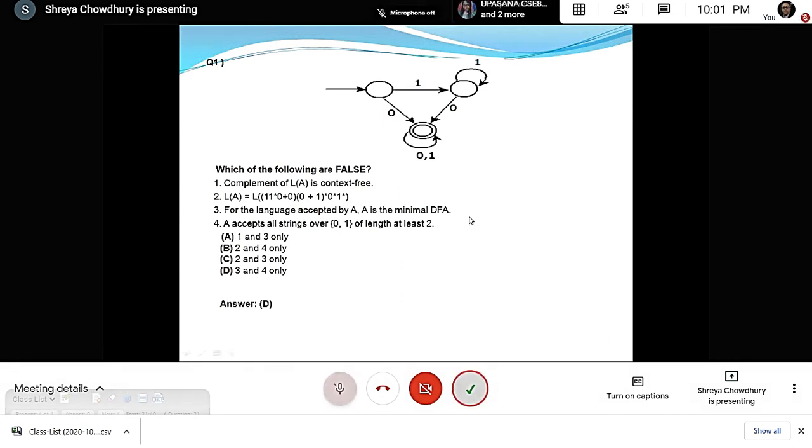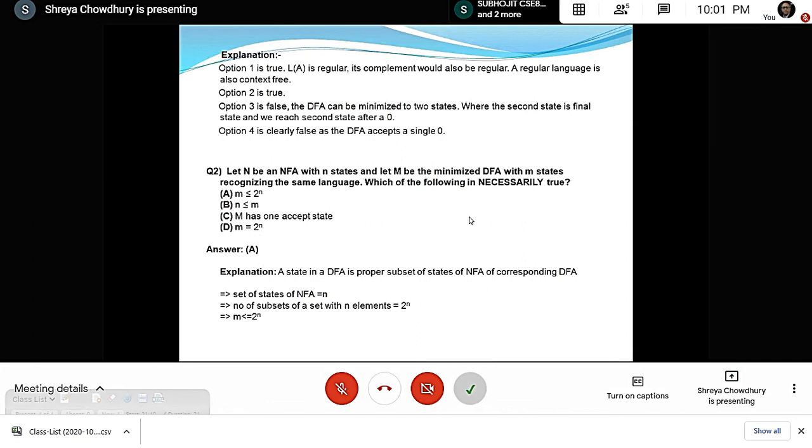Question 2: Let N be an NFA with n states, and let M be the minimized DFA with m states recognizing the same language. Which is necessarily true? Options are: M ≤ 2^n, n ≤ M, M has one accept state, or M = 2^n. If an NFA has n states, its DFA can have at most 2^n states, but may have less. The answer is option A.